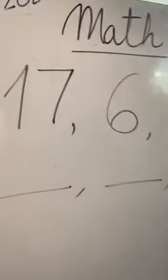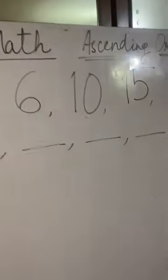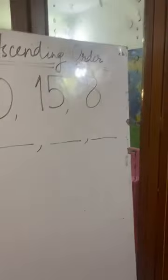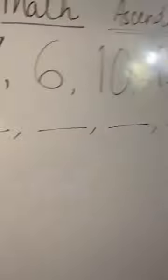Smallest to biggest number. Now look at the numbers here: 17, 6, 10, 15, and 8. Now tell me the smallest number here. Six. Who told me? Six. Oh wow, very good. Six.